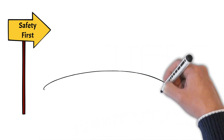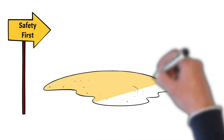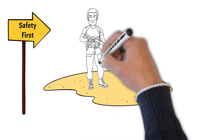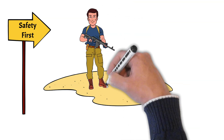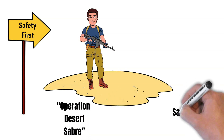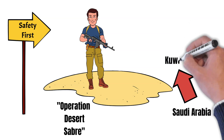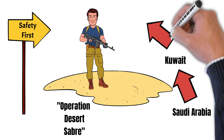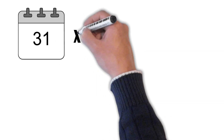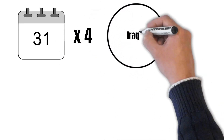By mid-February, coalition forces had shifted the focus of their air attacks toward Iraqi ground forces in Kuwait and southern Iraq. A massive allied ground offensive titled Operation Desert Sabre was launched on February 24th, with troops heading from northeastern Saudi Arabia into Kuwait and then southern Iraq. Over the next four days, coalition forces circled and defeated the Iraqis and triumphantly liberated Kuwait.